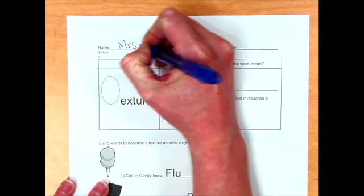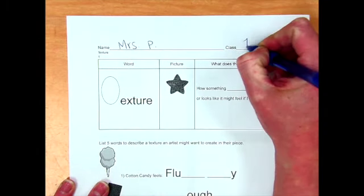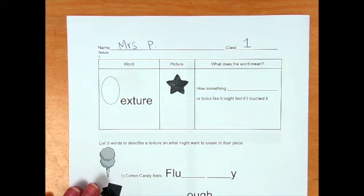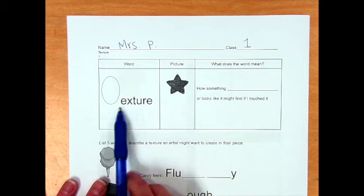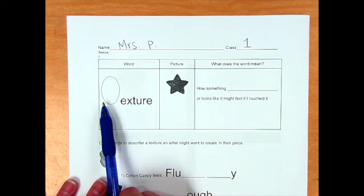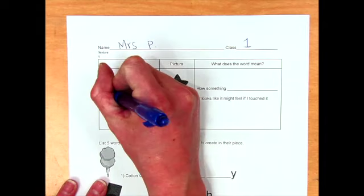So at the top of your paper, please put your first name, last initial, and your class. And then, like I said, our special word is going to be texture. And I wrote most of the word for you right here and just left out one letter, the beginning letter. We're going to put a T right here.